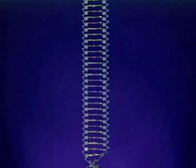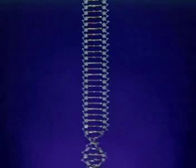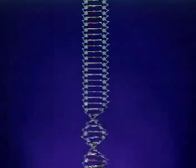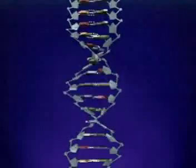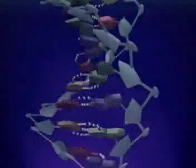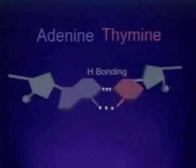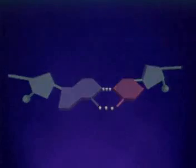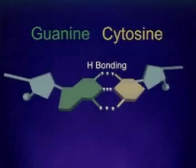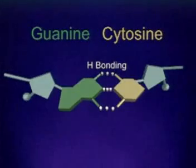There are four different bases and only certain pairs are possible in forming the rungs. Adenine is always opposite thymine and guanine is always opposite cytosine.